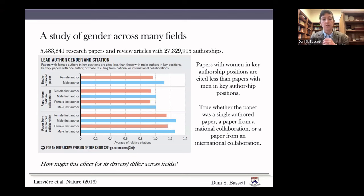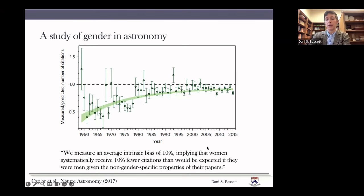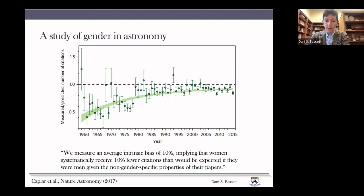One interesting question being asked by multiple fields is: is this true of our field? Here's a study of astronomy published in Nature Astronomy in 2017 — not by us — where authors show the measured or predicted number of citations as a function of year from 1960 to 2015. There is a slow move toward the equity line, which is encouraging, but they measure an average intrinsic bias of about 10%, implying that women systematically receive 10% fewer citations than would be expected if they were men, given non-gender-specific properties of the papers.